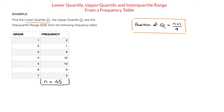Now that we know n, we go back to our formula for the position of the lower quartile and replace n with 45, giving us (45 + 1) / 4 = 46 / 4, which equals 11.5. Remember, this isn't the value of the lower quartile — this is its position.